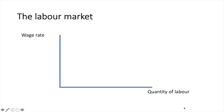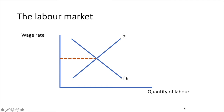This graph has been drawn exactly how you should be drawing in your notes as well as your exams. Set up your axes as such, then draw in a downward sloping demand curve and label it DL. Next add in your supply curve and label it SL. Then we draw a dotted line to the y-axis and call this wage rate W star. Similarly, we drop down to the x-axis and label that point Q star. W star is the equilibrium wage rate and Q star represents the equilibrium quantity of labour.